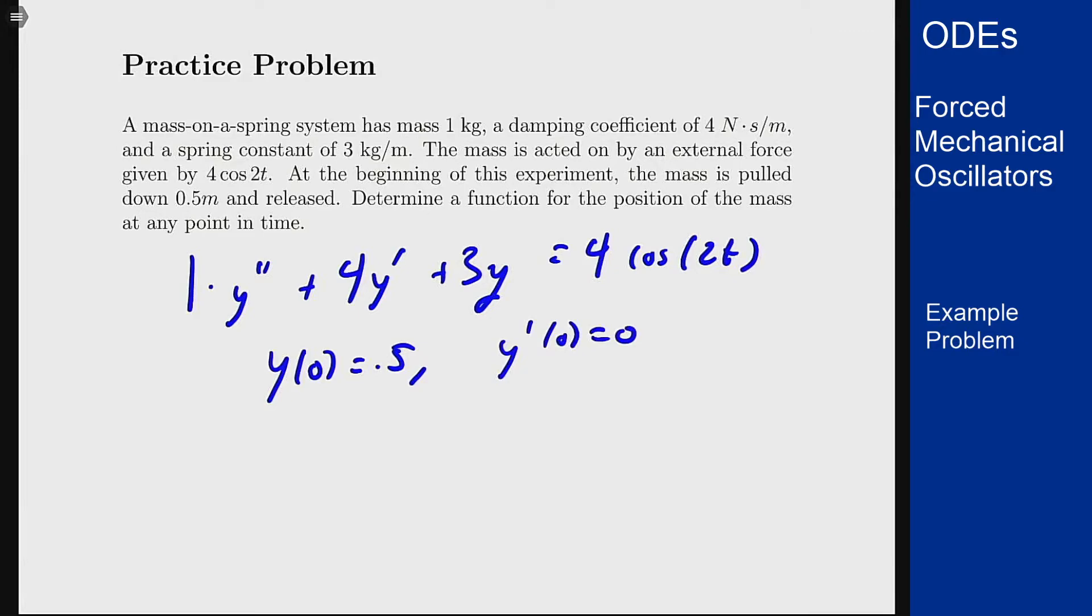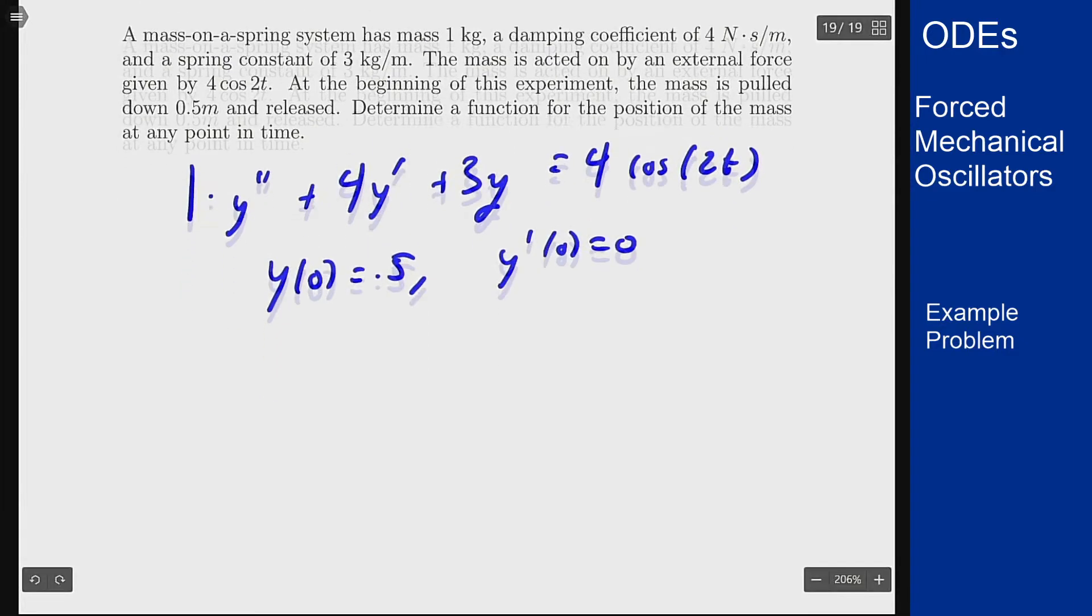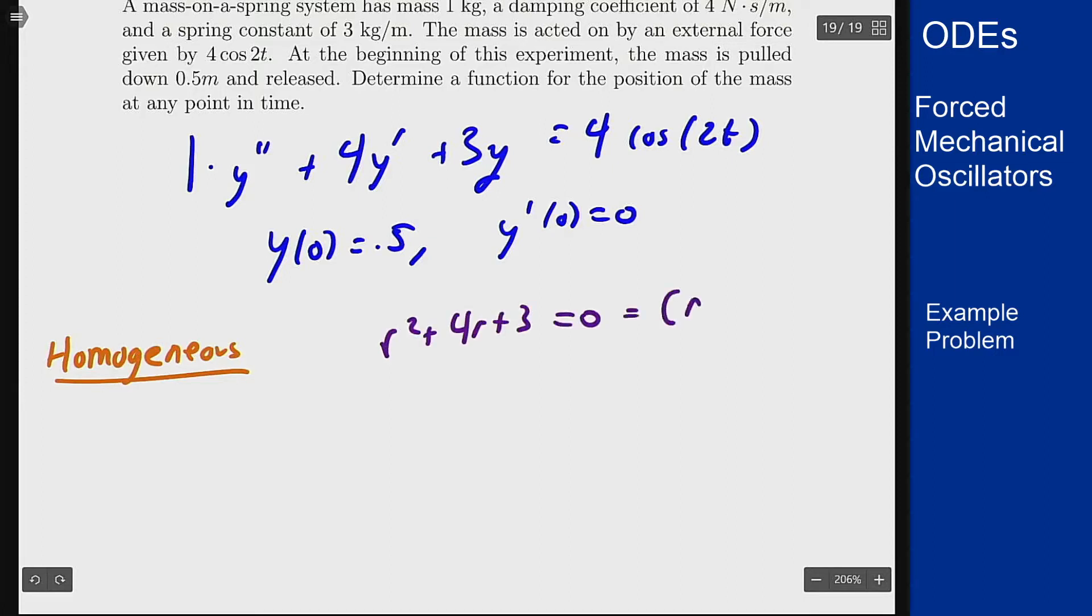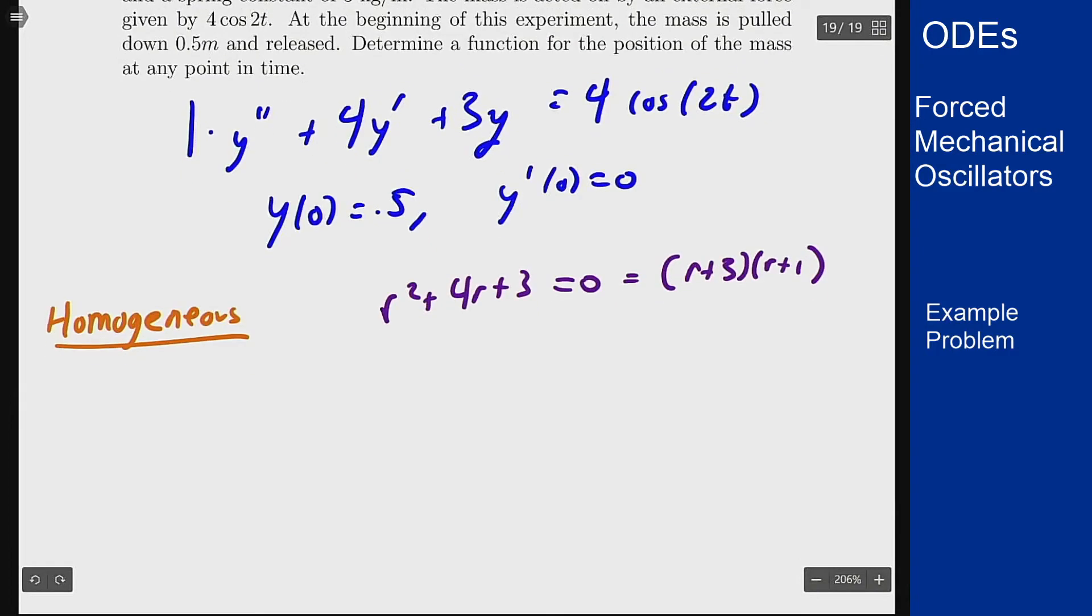Now we can try to solve this problem. For the homogeneous solution, or in this case the transient solution, we have a characteristic equation of r squared plus 4r plus 3 equals 0 which factors as r plus 3, r plus 1. So I have roots at minus 1 and minus 3, two real roots. The general solution there is c1 e to the minus t plus c2 e to the minus 3t.